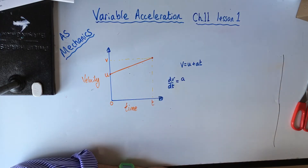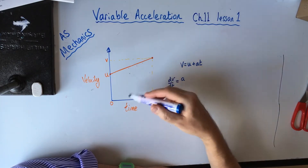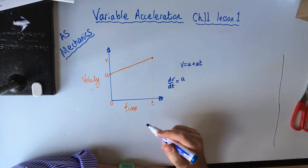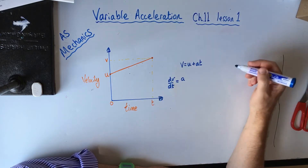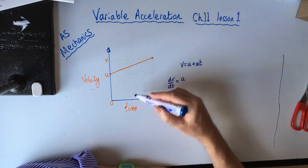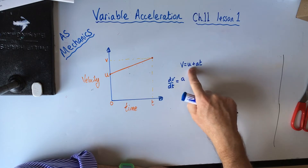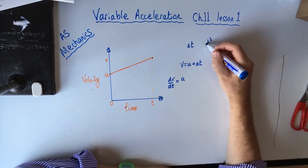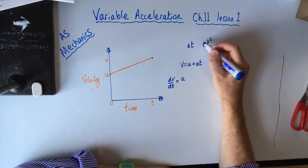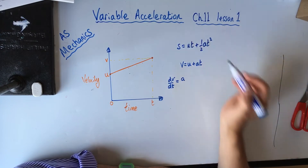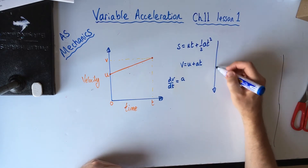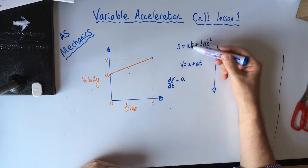We also know the area under these velocity-time graphs — trapeziums or similar shapes — gives us the displacement. If we integrate v equals u plus at with respect to t, u becomes ut, and the at term gives us a half at squared. So we get the familiar s equals ut plus a half at squared.